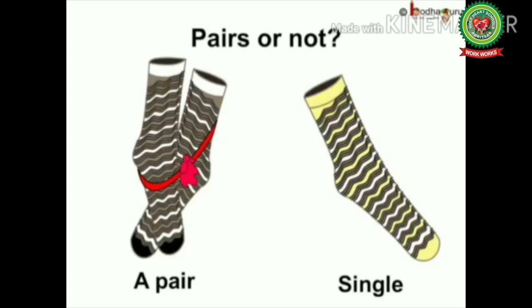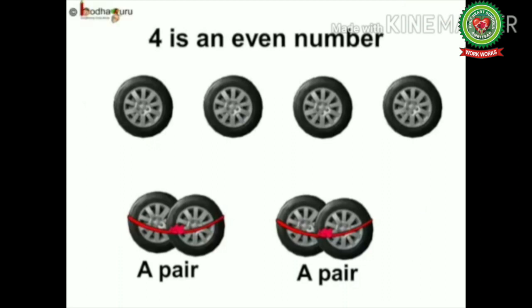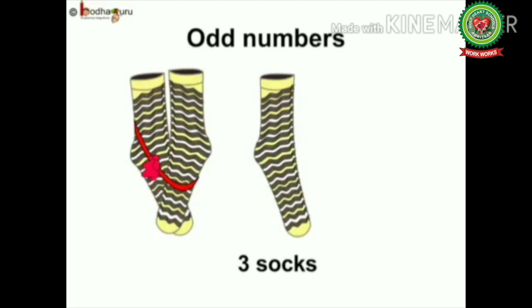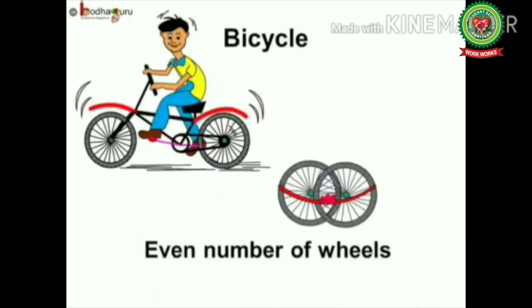Numbers which can be matched in pairs are even numbers. So two and four are even numbers. As we saw, we can make two pairs out of four, so four is an even number. Numbers that cannot form any pair are called odd numbers — they do not come in the table of two. One will always be left alone, so three and five are odd numbers that do not make a pair.